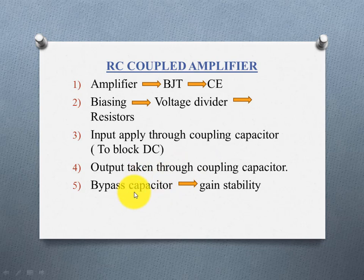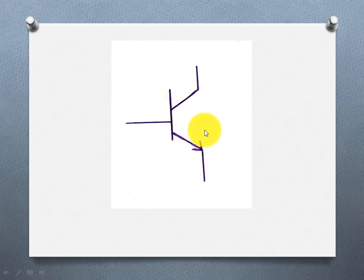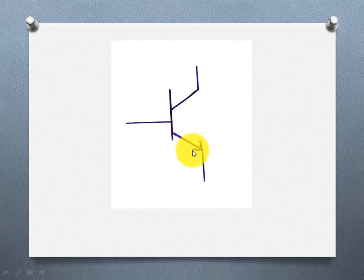First point is the BJT symbol in common emitter. BJT symbols are NPN and PNP. The symbol shows current flow direction. NPN: current flows outward; PNP: current flows inward — that is the difference between them.